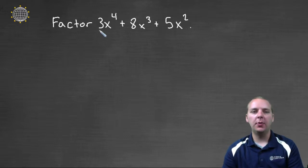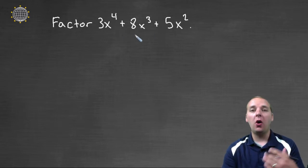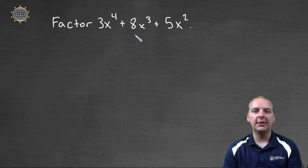Let's see if we can factor this polynomial 3x to the fourth plus 8x cubed plus 5x squared. Now I see that it's a trinomial, and one thing that catches my attention is that there's some common factors here. That's always what we should look for first to see if there's anything common to all three of these terms here.